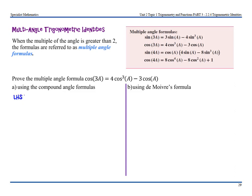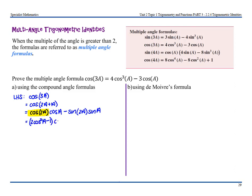First, we'll use the compound angle approach. The left-hand side is cos(3a), which I can rewrite as cos(2a + a). From the formula sheet, that's cos(2a)cos(a) − sin(2a)sin(a). From there, replace cos(2a) using the formula sheet — that's (2cos²a − 1) times cos(a).